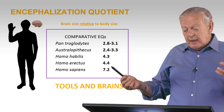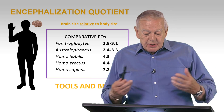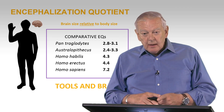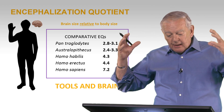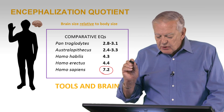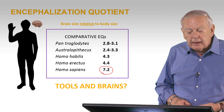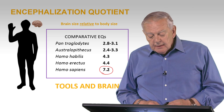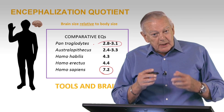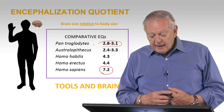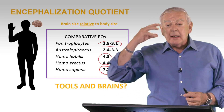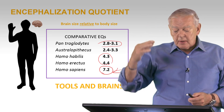One can look at it another way: the encephalization quotient, which is simply the size of the brain relative to the size of the body. We have a very large brain compared to our body, giving an encephalization quotient of 7.2. Chimpanzees have relatively small brains, and early Homo like Homo habilis or Homo erectus are a little bit bigger. But we stand out as having exceptionally large brains compared to our body size.